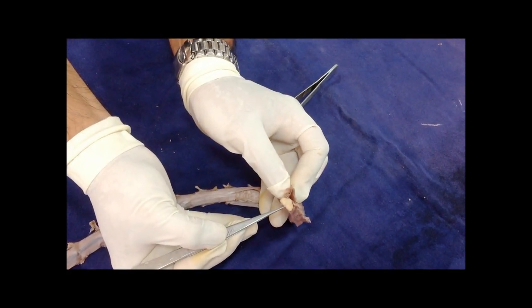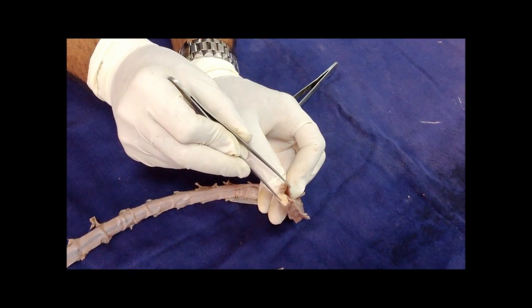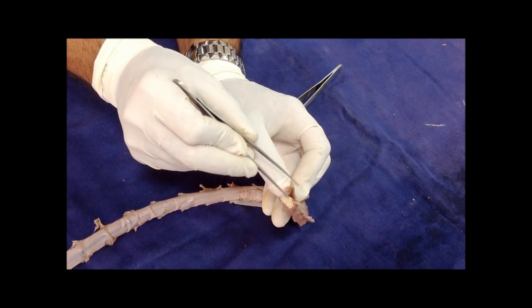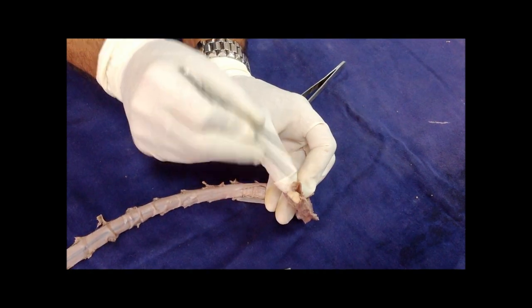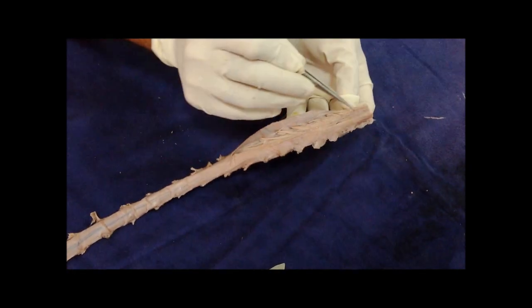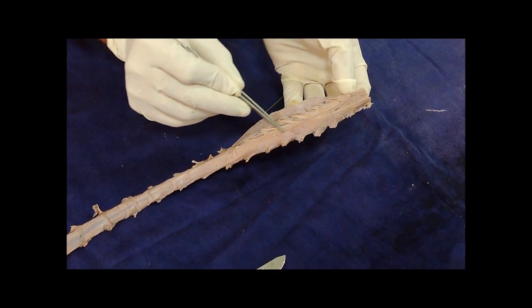And then we can see this fissure, anterior median fissure which is very deep. That also helps us to identify the anterior surface. Then the linea splendens helps us to identify the anterior surface.